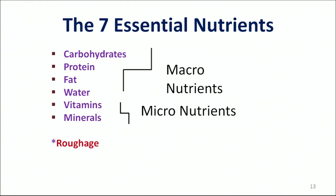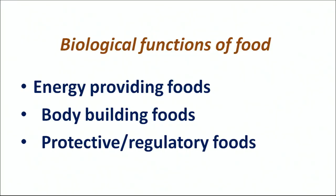There are basically seven essential nutrients found in any food item. Number one is carbohydrates, proteins — as we can see on the slide, these are the major categories of macronutrients. Vitamins and minerals form the category of micronutrients, and then there is roughage. Now we come to the biological classification of food — that is, classification on the basis of functions performed in our body. Food is divided into three categories: energy-providing foods, body-building foods, and protective or regulatory foods.